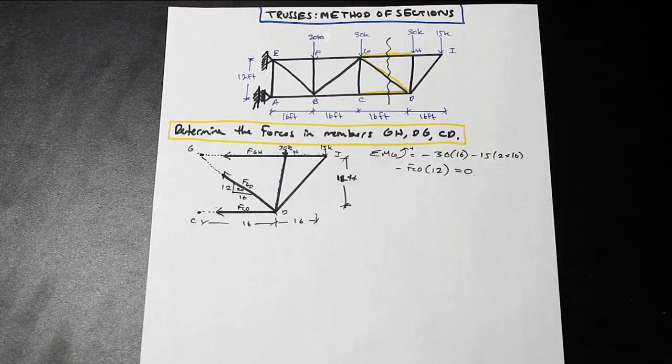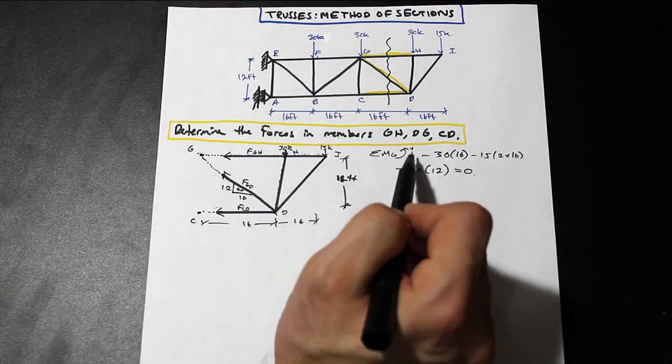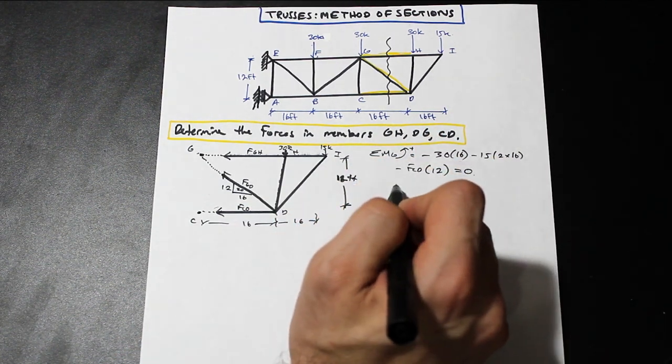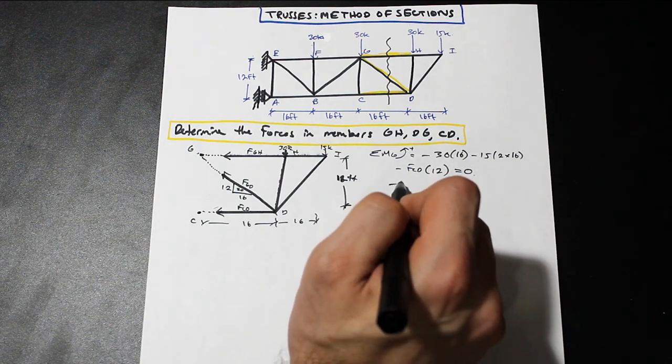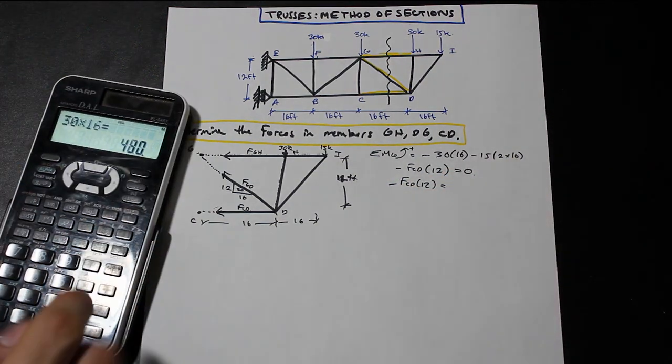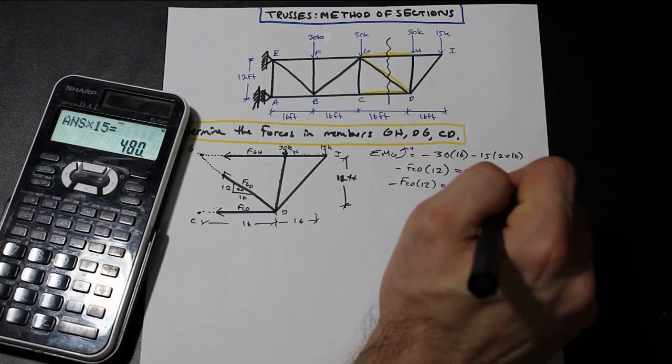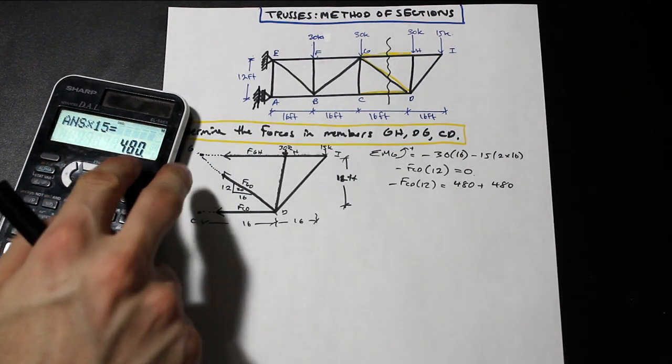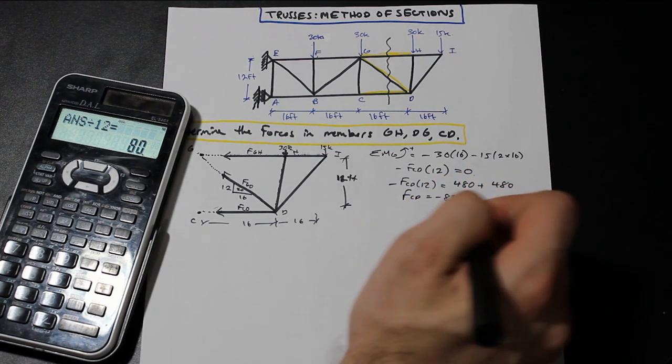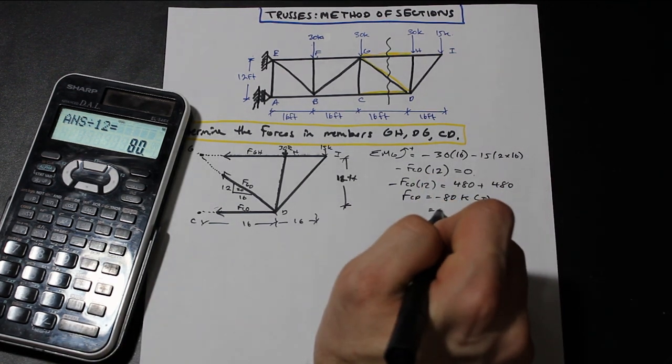And the sum of the moments at any joint must equal zero. So, now that we have that, as you can see, we simply have one equation with one unknown, and now we can solve for FCD. So isolate for FCD here. So move these two to the other side. So we're going to have negative FCD times 12 is equal to, we have 480 plus 480. And that gives us an FCD value of, dividing by negative 12, we're going to get that FCD is equal to negative 80 kip.